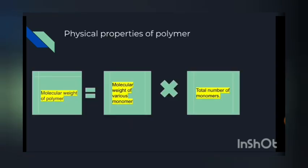Now come to the physical properties of polymer. The molecular weight of polymer equals the molecular weight of various monomers multiplied by the number of monomers. Simple.